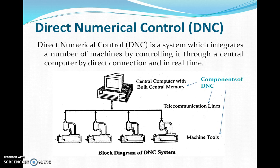DNC is a system where we have only one computer which controls all the machine tools attached to it. If we use four CNC machines, we would have a computer attached to each machine tool, making it very difficult to give instructions to each machine and control all of them at a time. So the better option is to replace each individual computer with a single computer — that is the concept of DNC.